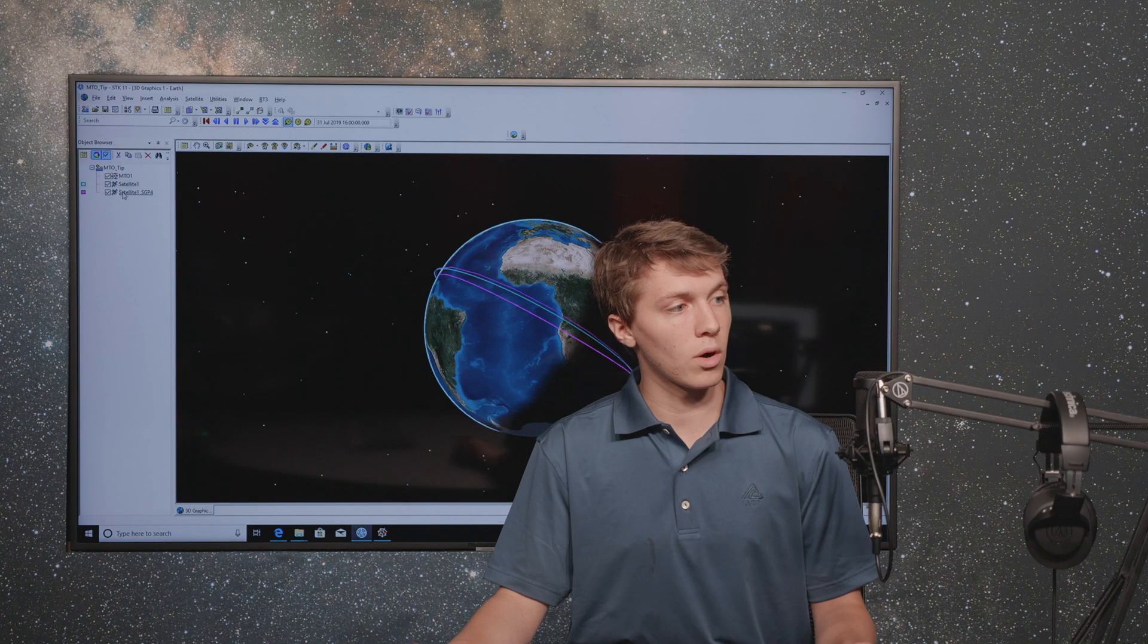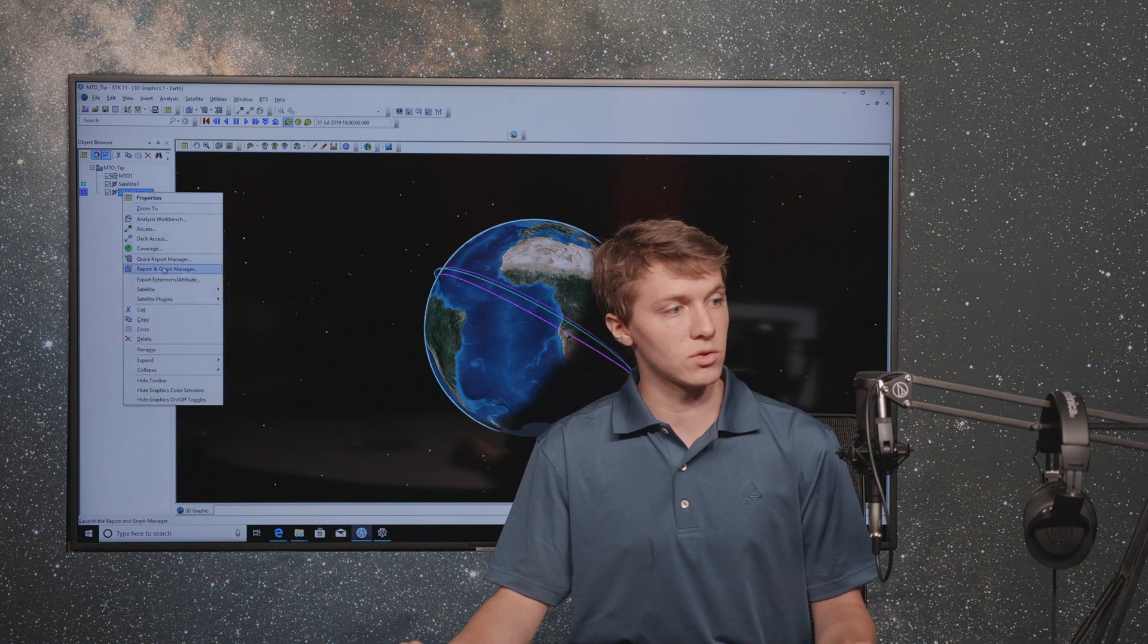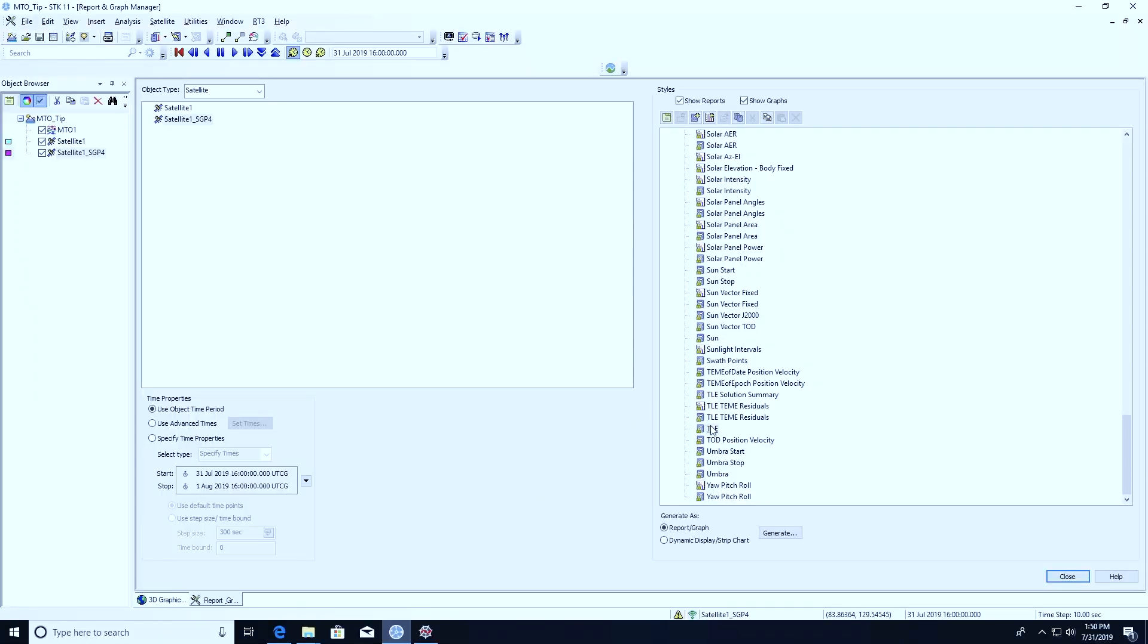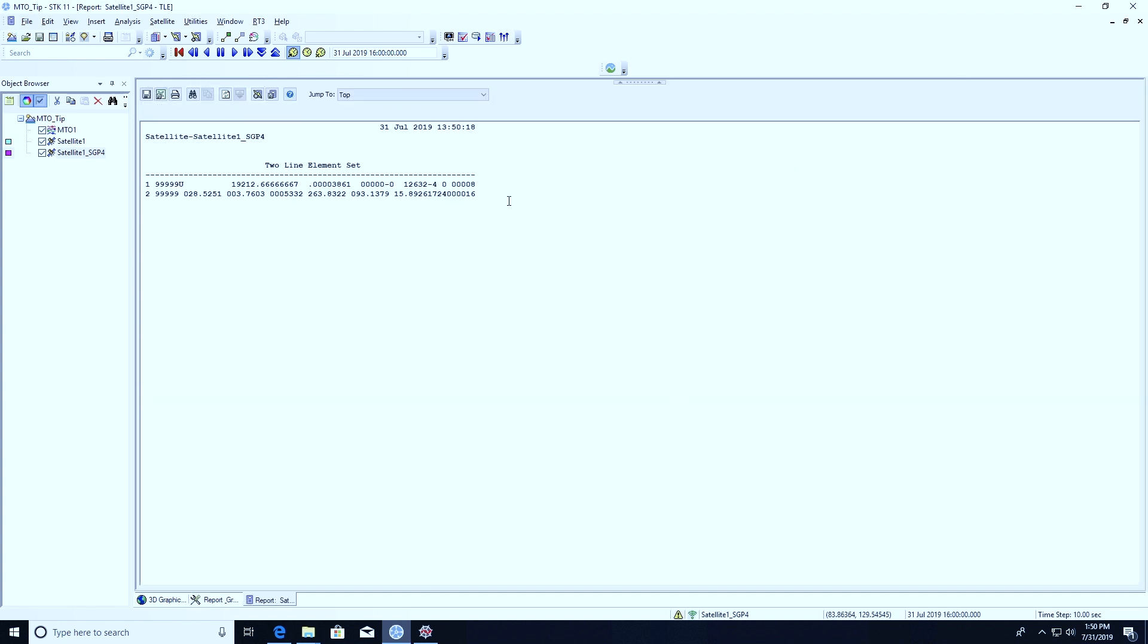What I want to do with this satellite, this newly created satellite, is we're going to right-click it and open up the reporting graph manager. We're going to choose the TLE report here on the reports list. Choose TLE, double-click that. You'll see here that it's given us the two-line element file for the satellite. The only parameters that really matter to us are these lines here, one and two. Two-line element file conveniently only has two lines.